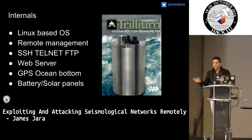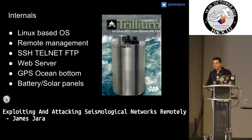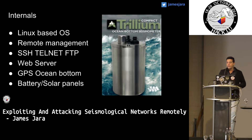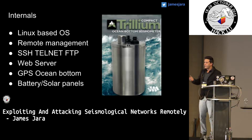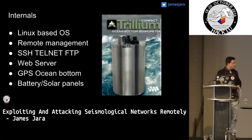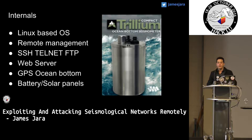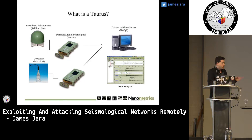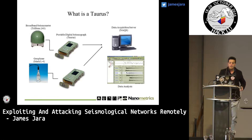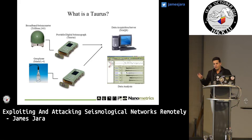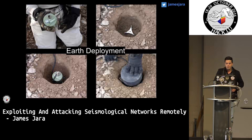Looking at the internals of each device: they are Linux-based, they have a remote management system, and they run several services like SSH, Telnet, and FTP. They have a web server running Jetty, an accurate GPS system, and a battery that lasts at least one year. The Taurus is a portable digital seismograph — the sensor connects to the Taurus, and Taurus sends the data to the acquisition server. Here is how it looks in a simple air deployment.